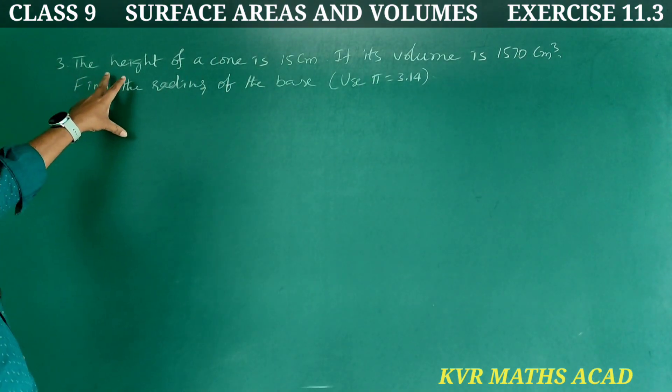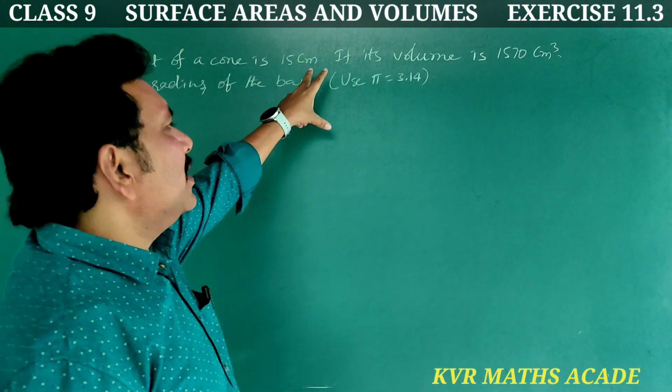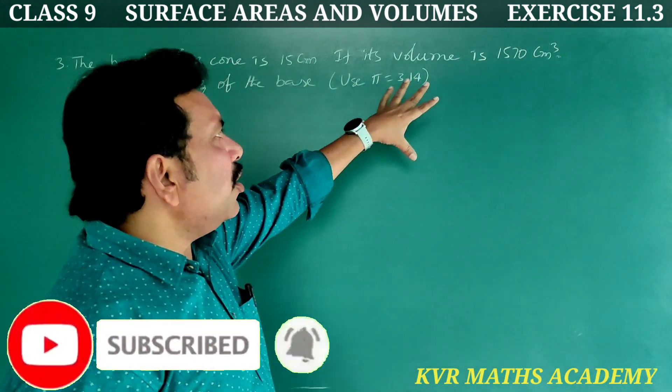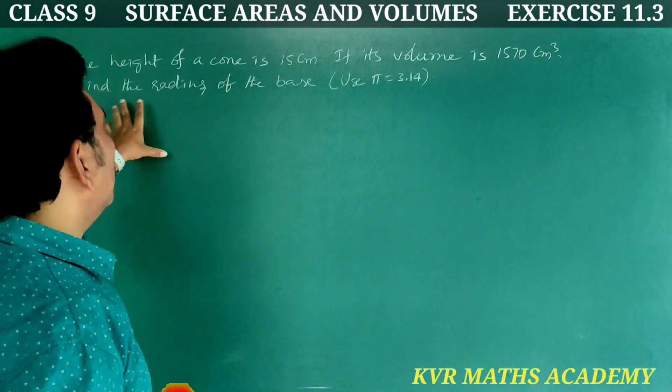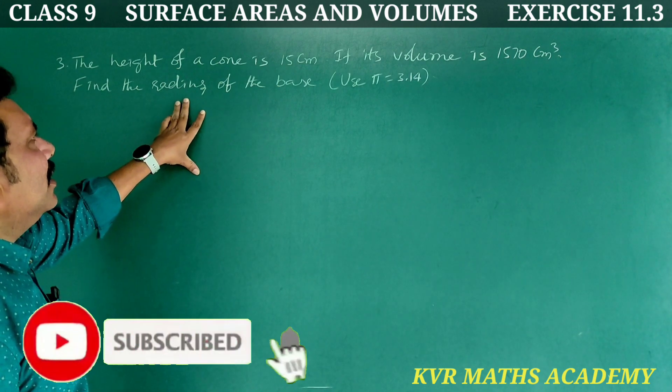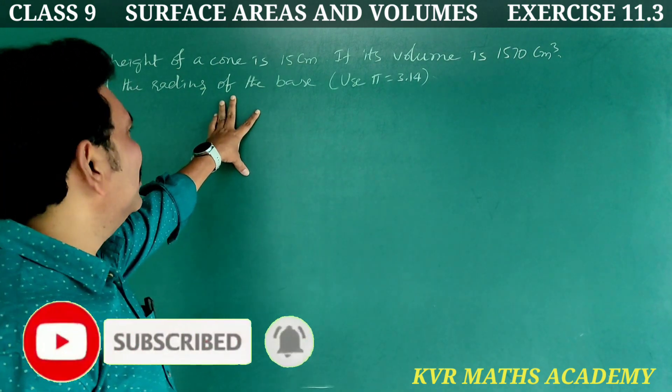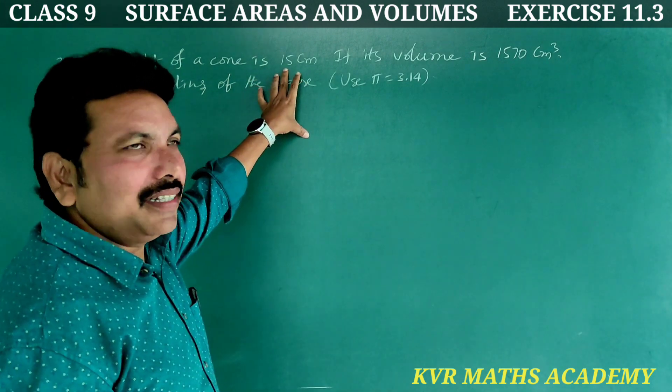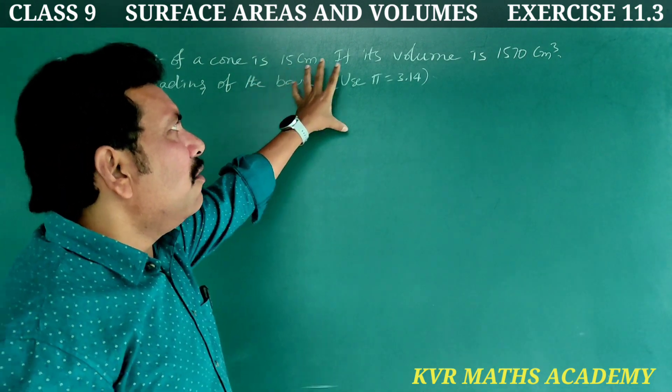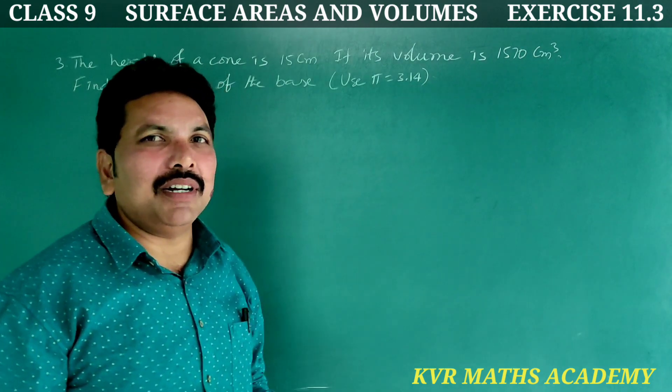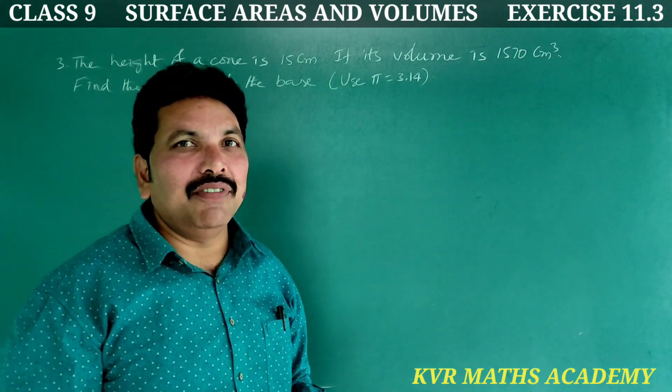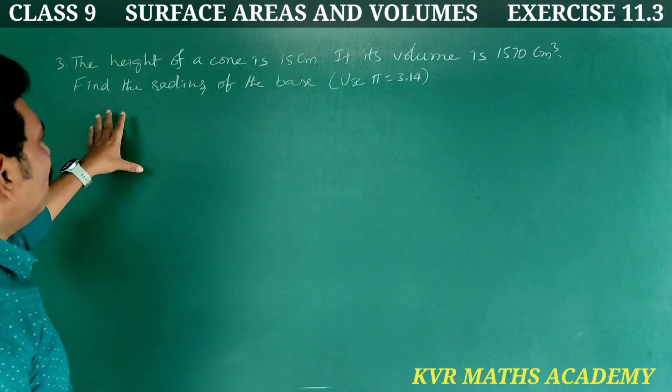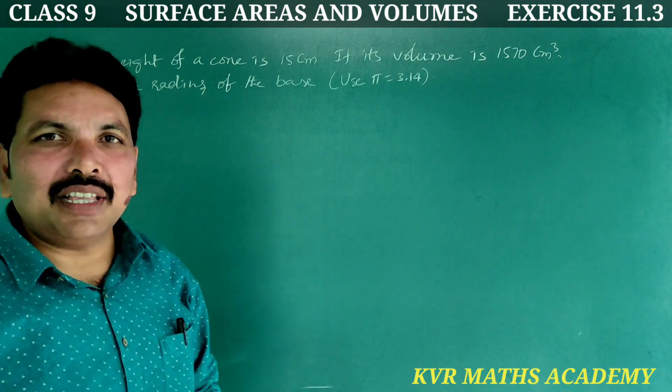Third question. The height of a cone is 15 centimeters. If its volume is 1570 centimeter cube, find the radius of the base. The height of a cone is 15 centimeters. Volume is 1570 centimeter cube. Find the radius of the base.